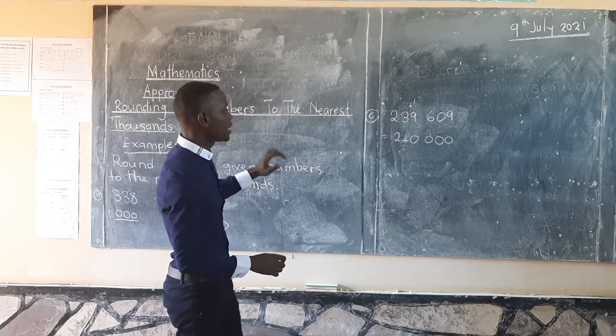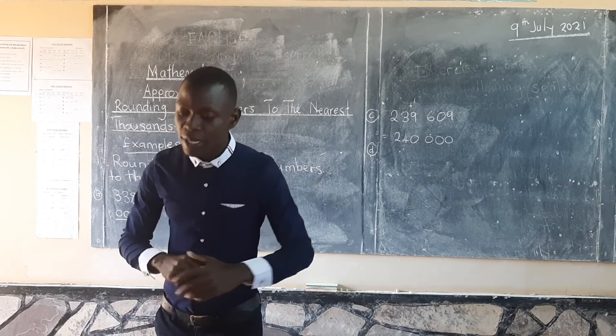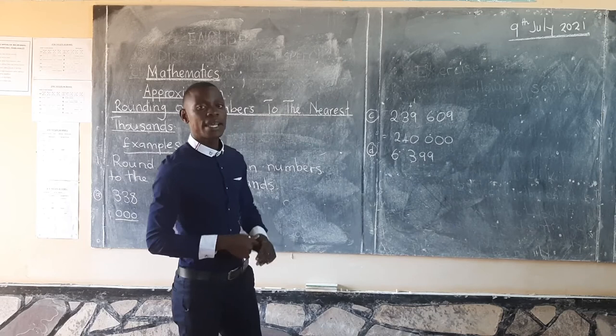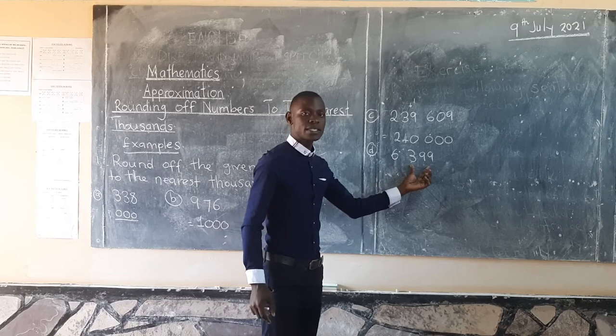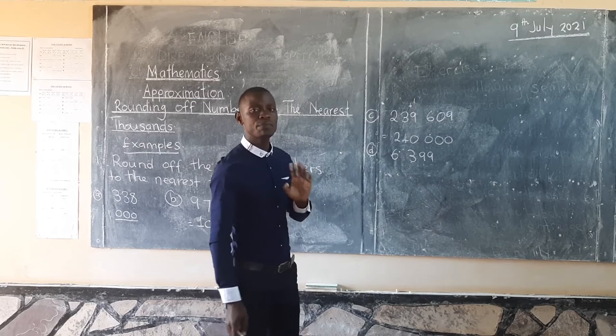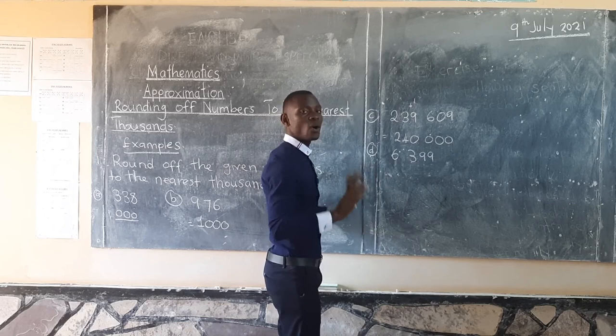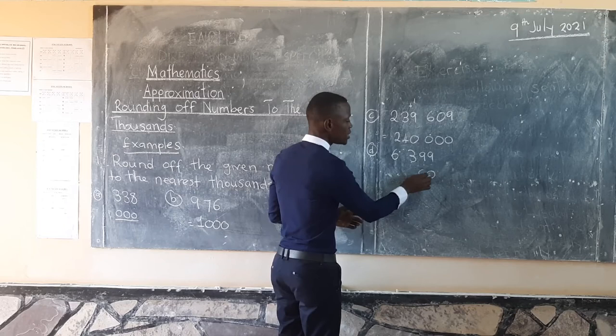Another example is 6,399. We look at the last three digits: 399. Is 399 above 500 or below 500? The answer is 399 is below 500. The value is 000, and we maintain 6. So 6,399 rounds to 6,000.